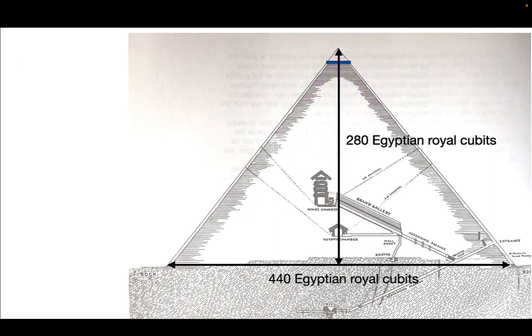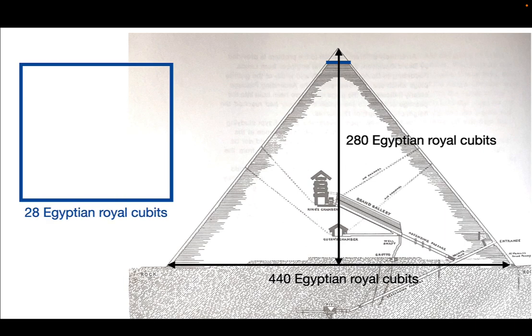Now the current top right there is, we'll picture it from a top view here, is 28 Egyptian royal cubits on a side.